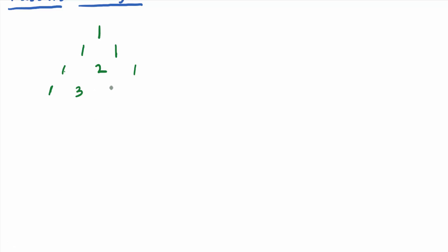And then go past the two horizontally, and then add the two and the one and get another three, and then put a one on the end. And you've got that row of the triangle.